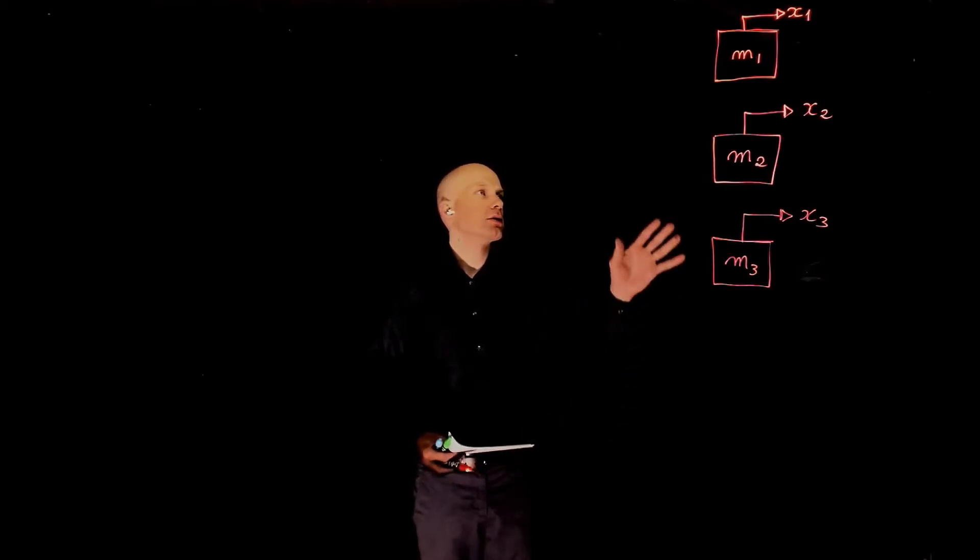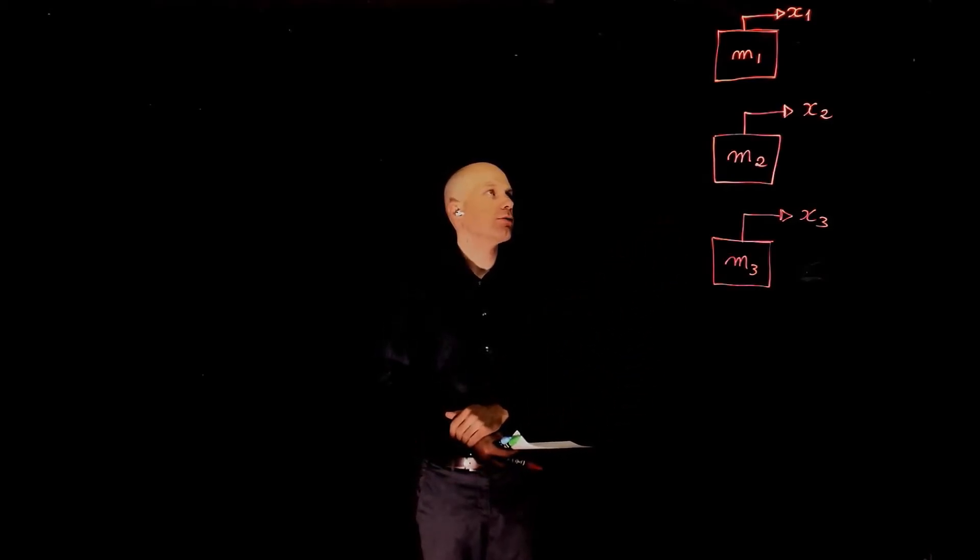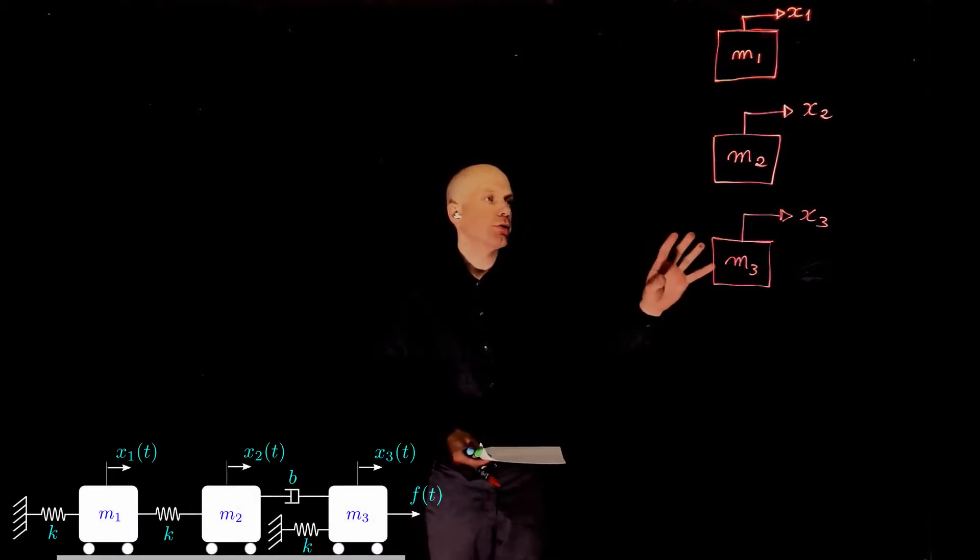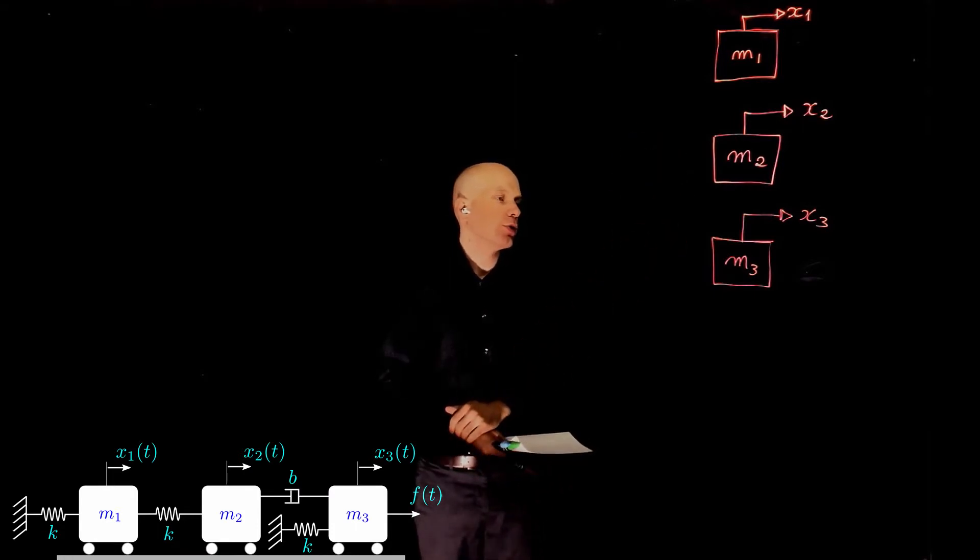Here we have a system of three masses connected through a series of springs and dampers following this arrangement. We are looking for the equation of motions of masses m1, m2, and m3.